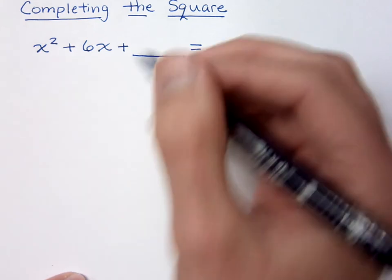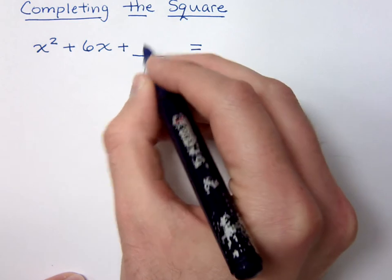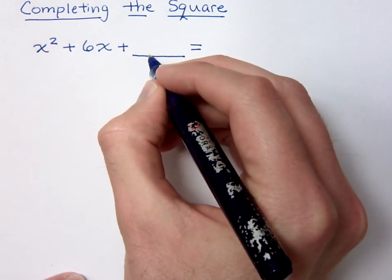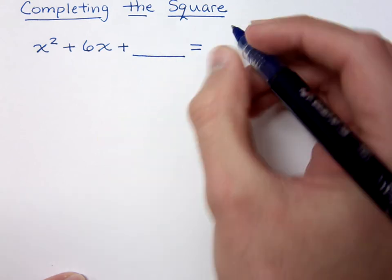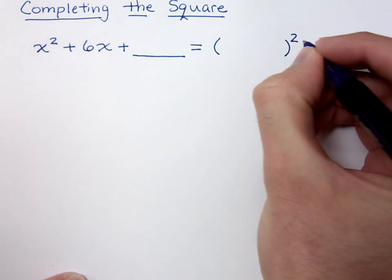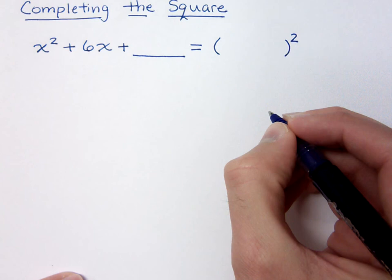Now, when we talk about completing the square, it's all about finding this missing piece here that will allow this polynomial to factor. And not just factor by any old means, we want it to factor very specifically as a binomial square. That means we want the factors to be the exact same factor.